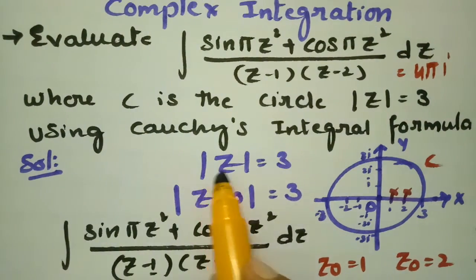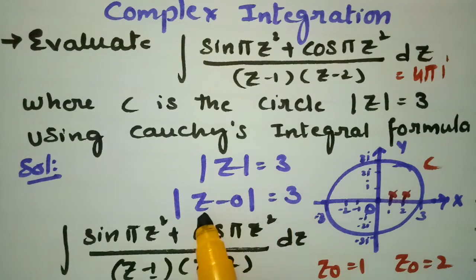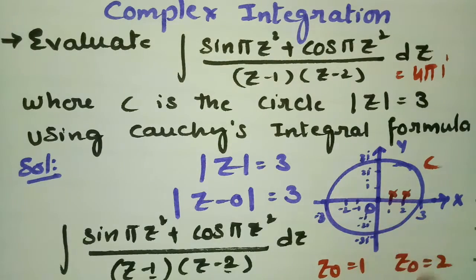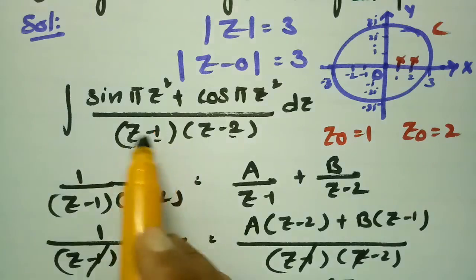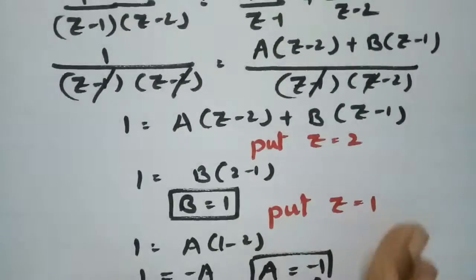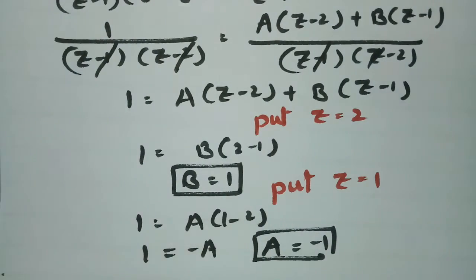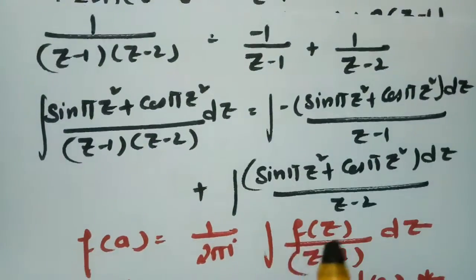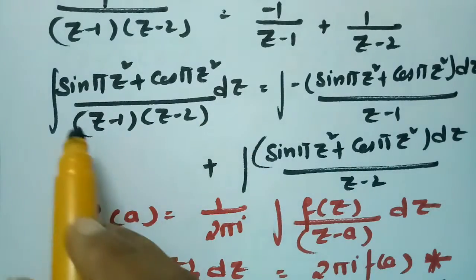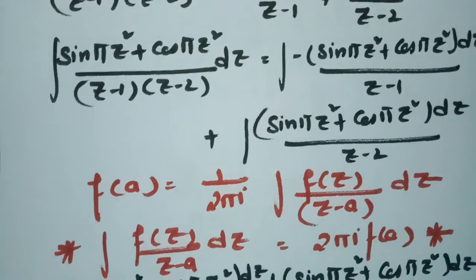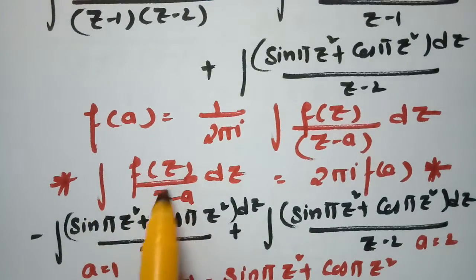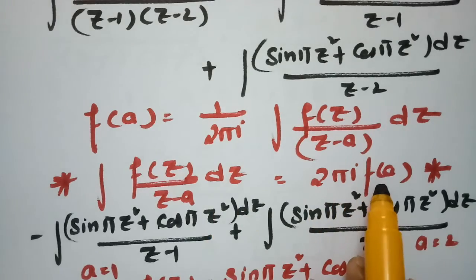To summarize: the contour |z| = 3 is a circle with center 0 and radius 3. We resolved 1/[(z−1)(z−2)] into partial fractions, finding A = −1 and B = +1. After multiplying throughout by sin(πz²) + cos(πz²) and integrating, we applied Cauchy's integral formula: ∫ f(z)/(z−a) dz = 2πi · f(a).